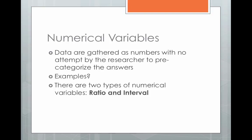Moving on from categorical variables, we have numerical variables. Numerical variables are where data are gathered as numbers, and there's no attempt by the researcher to pre-categorize the answers. These tend to be write-in questions, or where you're simply typing in a number. Examples of numerical variables include age, how often do you do something, how many times, or how long.